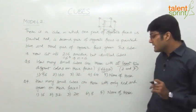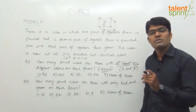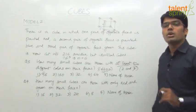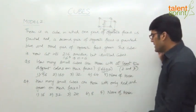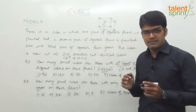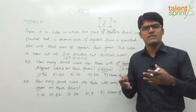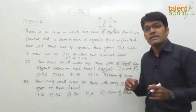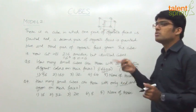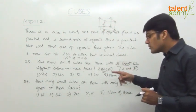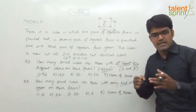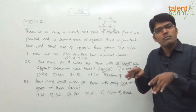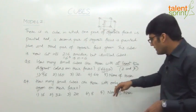Question 4: how many small cubes are there with only red and green on their faces? With only red and green — blue should not be there. Red and green means 2 faces are painted. 2-face-painted cubes exist on the edges. But we cannot take all 12 edges because some of those edges will also have blue. Edges are made up of 2 faces intersecting at a line — 2 faces intersecting can be blue-green, blue-red, or red-green. What we want is only red and green. Out of the total 12 edges: 4 will have red and blue, 4 will have red and green, and 4 will have blue and green.